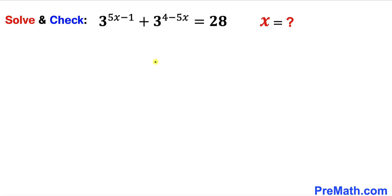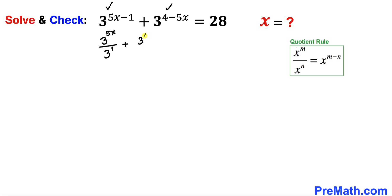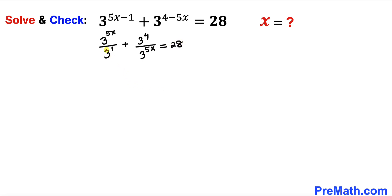Let's get started with the solution. We are going to recall the quotient rule of exponents and apply it to the two terms on the left hand side. The first term can be written as 3^(5x) divided by 3^1, and the second term as 3^4 divided by 3^(5x), equals 228 on the right hand side. Note that 3^1 = 3 and 3^4 = 81.